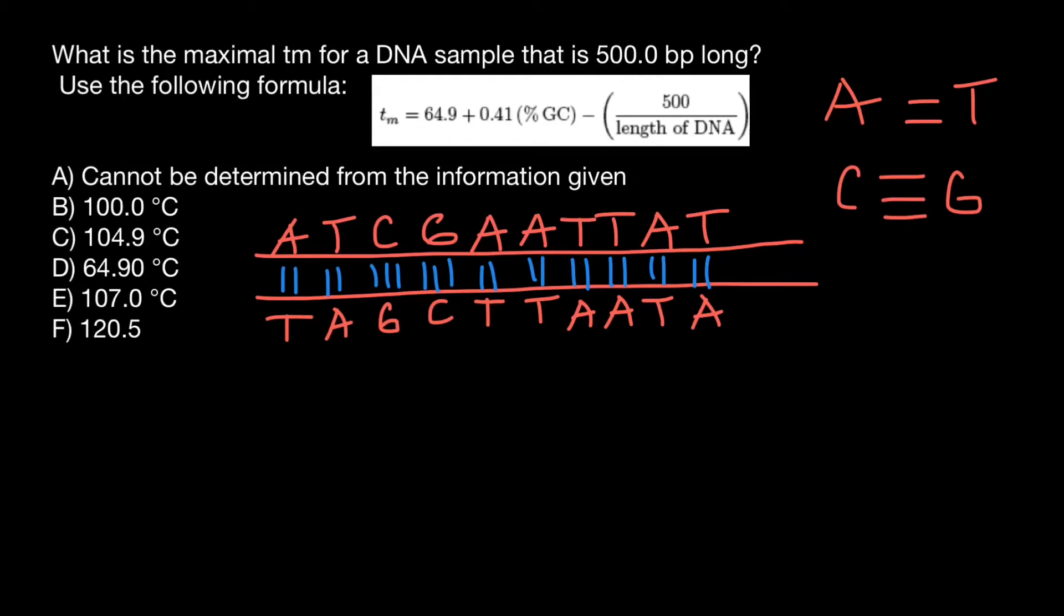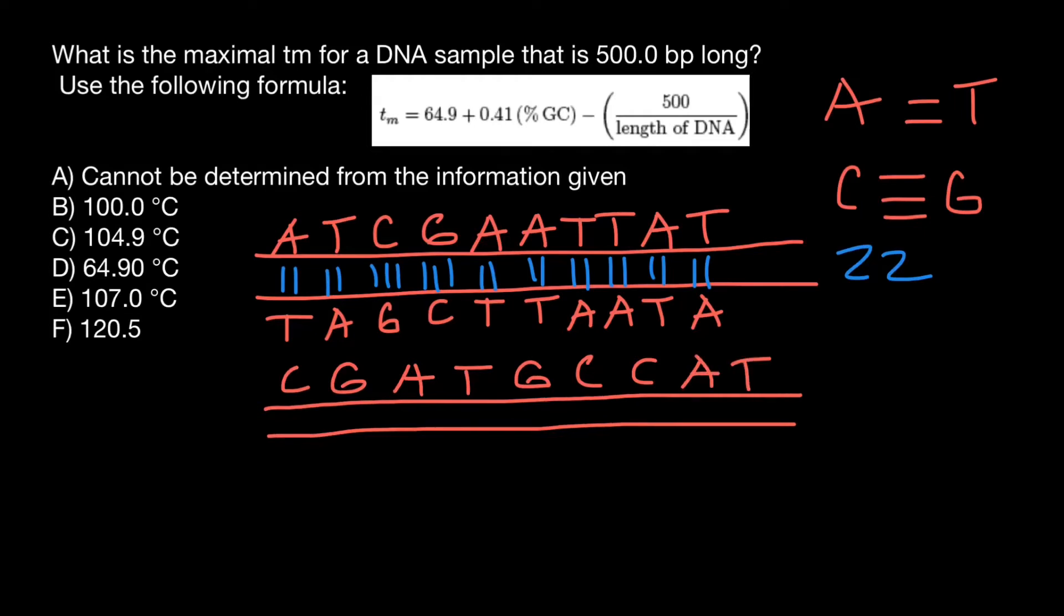So let's put this number here. Twenty-two hydrogen bonds in this double-stranded DNA. Now imagine we have another double-stranded DNA and the sequence is going to be as follows: C, G, A, T, G, C, C, A, T.